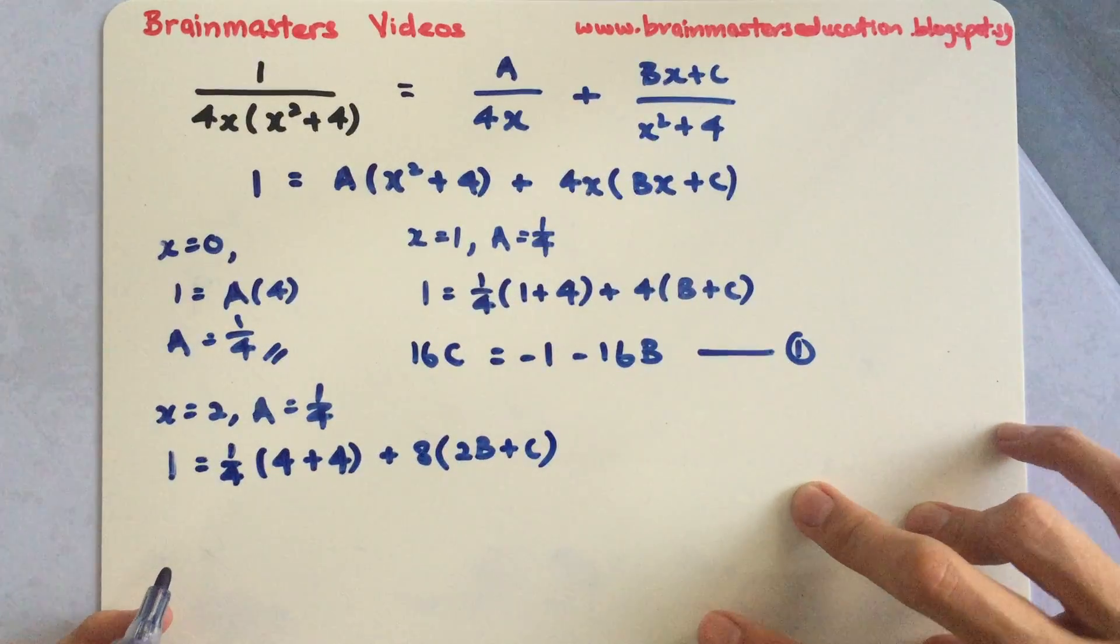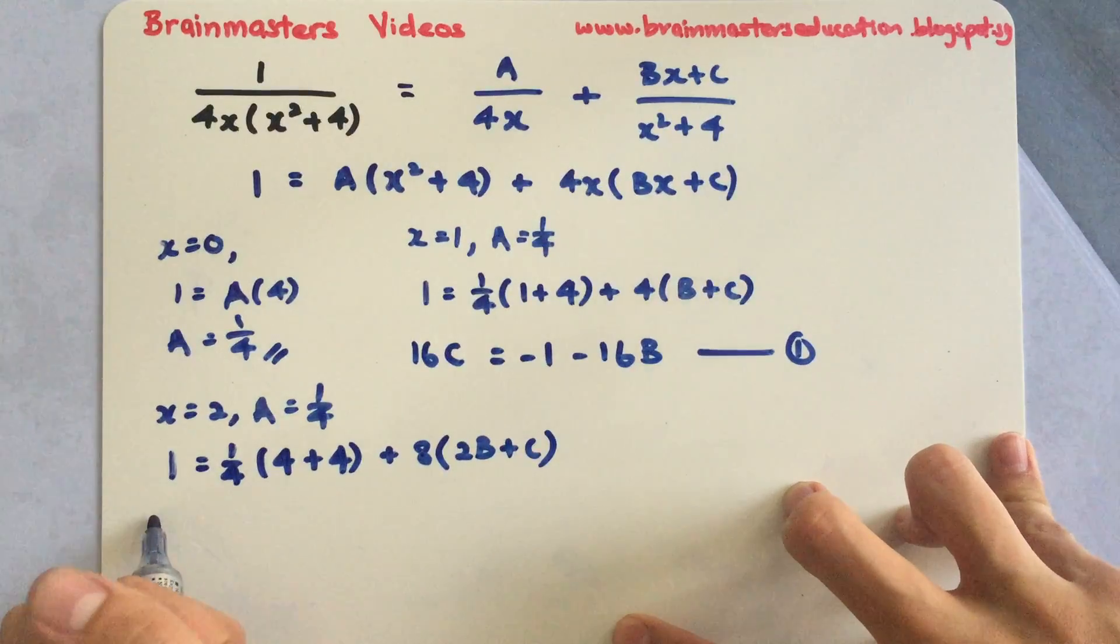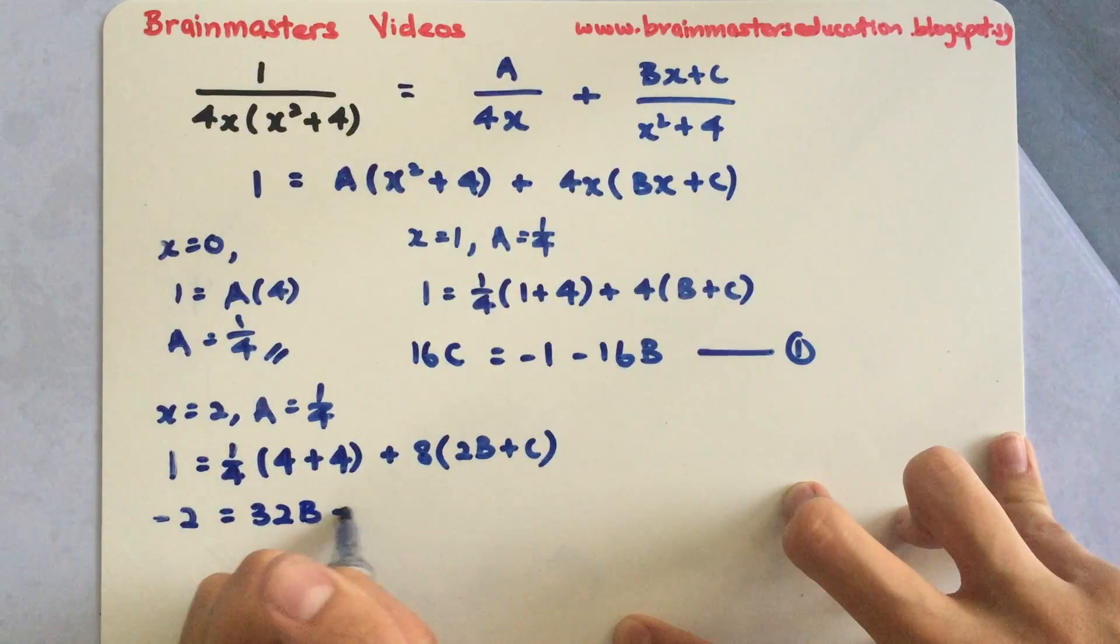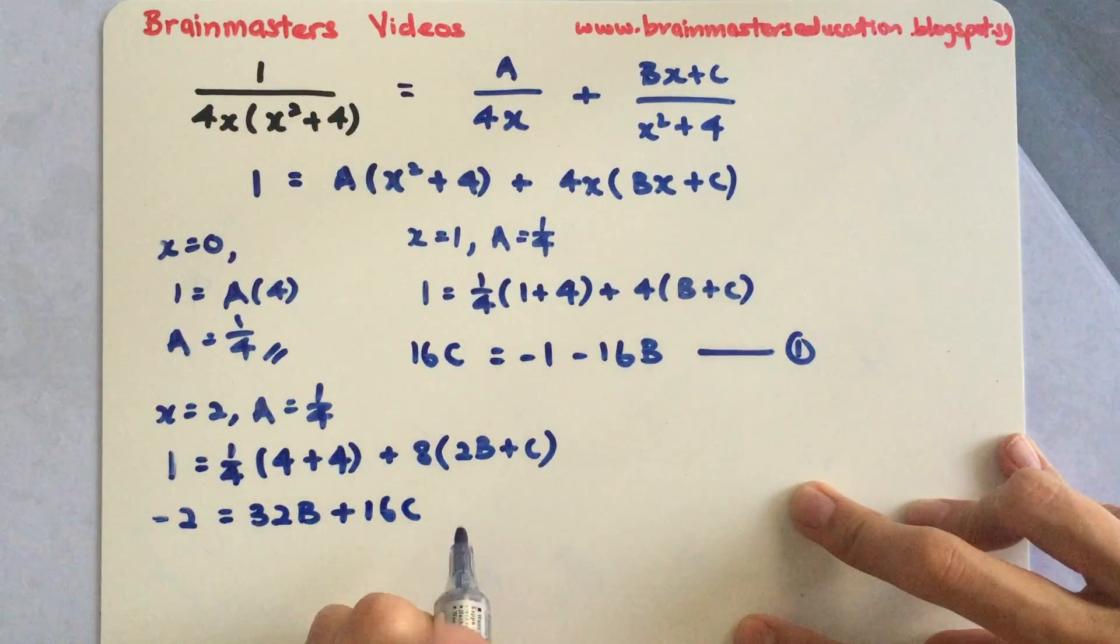By simplifying this again, what I will achieve is negative 2 equals to 32B plus 16C as my equation 2.